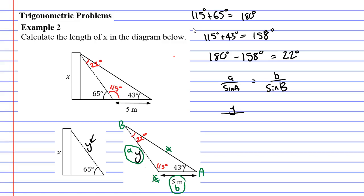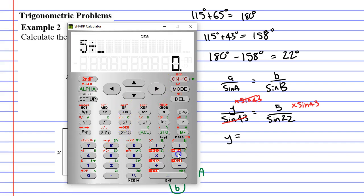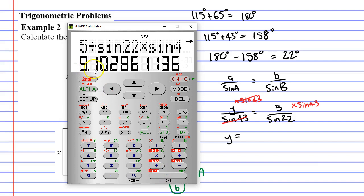So let's use our formula: a over sine capital A equals b over sine capital B. Now a is y and capital A is my angle 43 degrees. B is my five metre length and capital B is my 22 degree angle. Now I want to figure out y, so I've got to get rid of sine 43 — I'm going to multiply both sides by sine 43, which will cancel it out so that I can find what y equals. Let's bring up our calculator: 5 divided by sine 22, times sine 43, equals — and we get about 9.1.